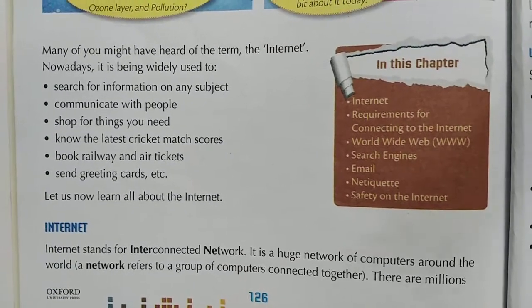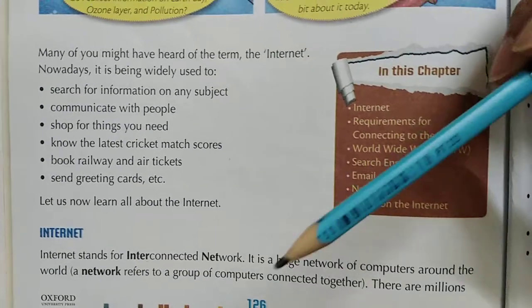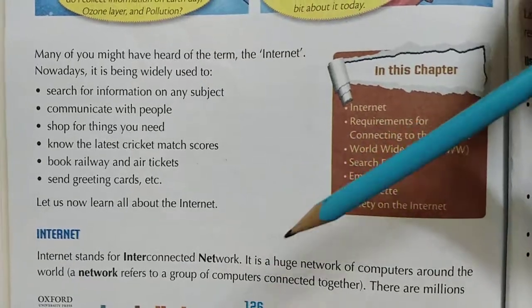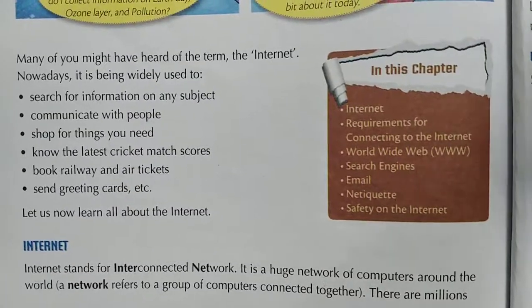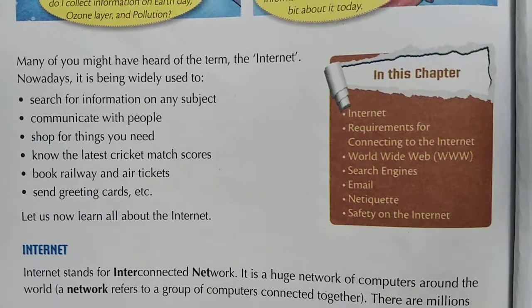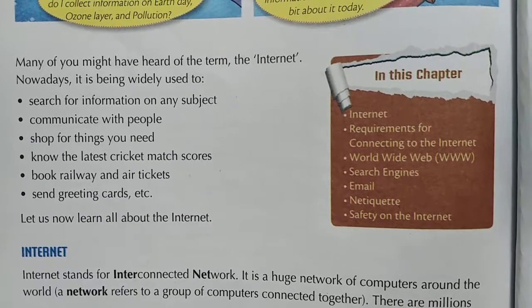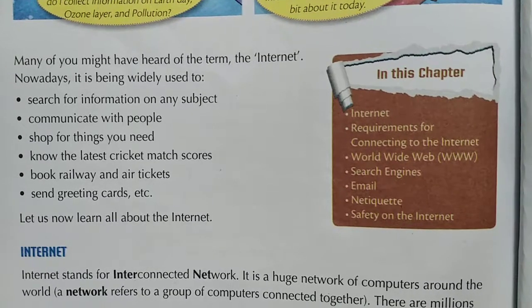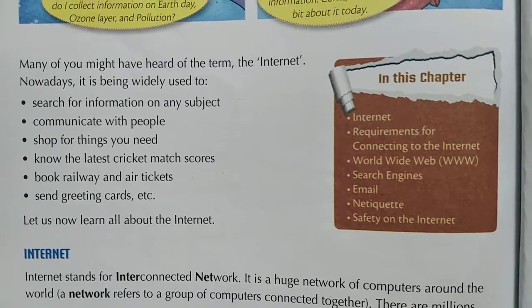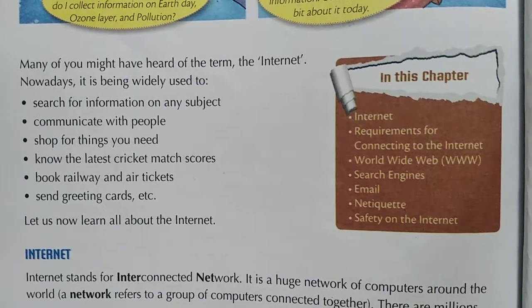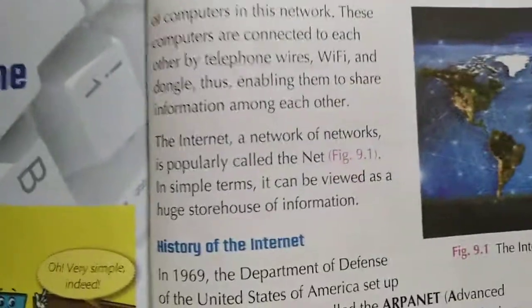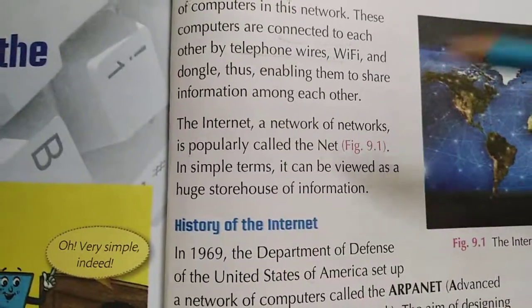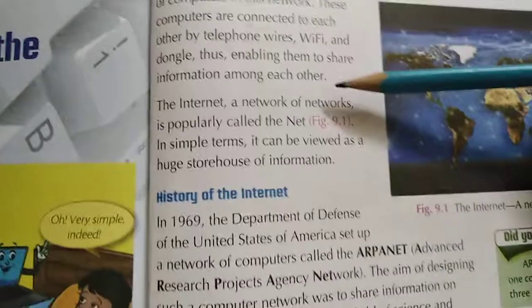So what is the internet? Internet is an interconnected network, meaning there are millions of computers which are connected with each other through wires and through Wi-Fi. Wires means telephone wires. So there are millions of computers connected with each other to communicate with each other.